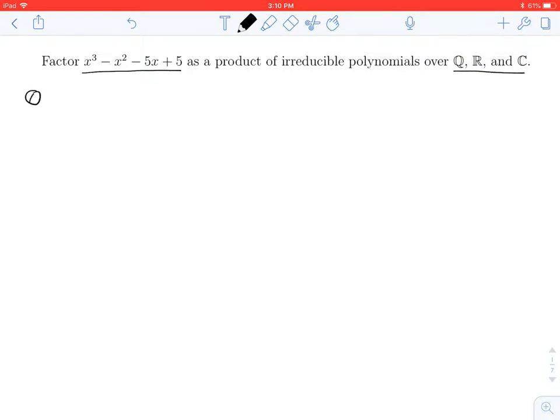So to work over the rationals, we're first going to make a clever observation. In the first two terms, the x cubed minus x squared, I can factor out an x squared, be left with x minus 1.